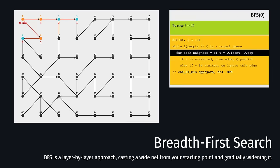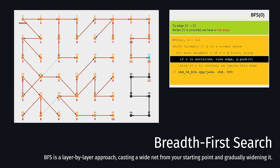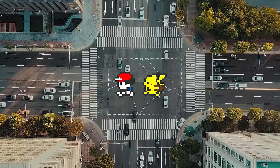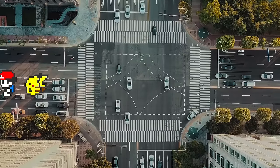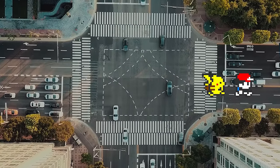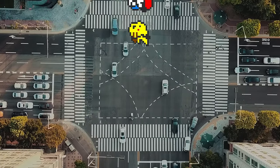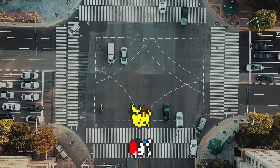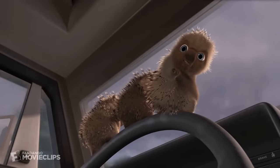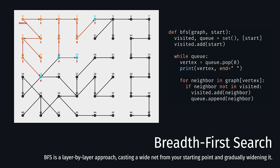When talking about DFS, you always have to talk about BFS — breadth-first search — which again is exactly how it sounds. Breadth first: expanding wide simultaneously instead of singular depth like DFS. BFS is a layer-by-layer approach, casting a wide net from your starting point and gradually widening it. If you're standing at an intersection with four roads, you take all four roads to their next intersection one at a time — that's the first layer. If you aren't at your destination at any of those nodes, you start the next layer by checking all remaining edges at each of those intersections. And because BFS keeps track of the paths taken, you're able to trace back the route, which will be the shortest path, but only in terms of layers traversed. It has the same space and time complexity as DFS.